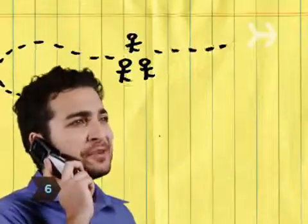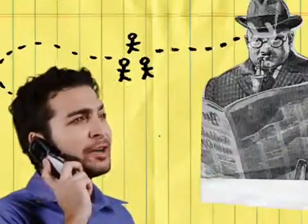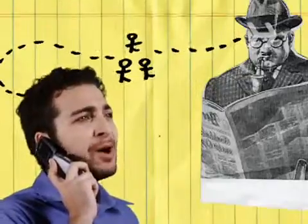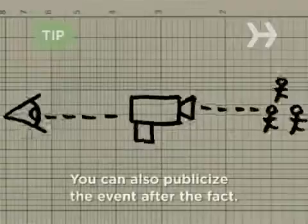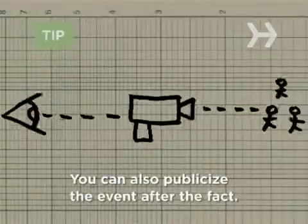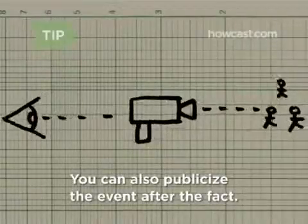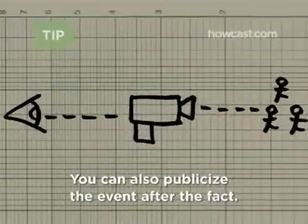Step 6: If you want to publicize your Smart Mob's actions, contact the media just before the Smart Mob swarms, and don't include many details to keep an element of surprise. If you photograph or videotape the event, you can also publicize it after the fact.